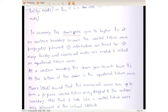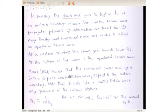In summary, this is the chain rule. At an eastern boundary, the chain goes to higher L values because the coastal Kelvin wave propagates poleward — energy travels away from the equator, which is permitted. Many Rossby and evanescent modes are needed to reflect an equatorial Kelvin wave. At a western boundary, the chain goes towards lower L. At the bottom of the chain is the equatorial Kelvin wave; there is no wave for L less than minus 1. Dennis Moore, in a remarkable but never-published PhD thesis, showed that the evanescent waves sum to form a beta-plane coastal Kelvin wave trapped to the eastern boundary.